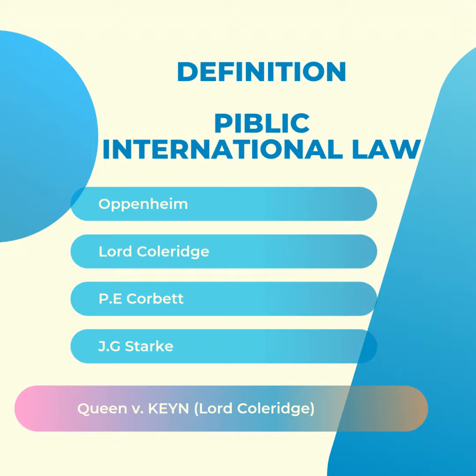Black's Law Dictionary defined law as that which is laid down, ordained, or established, and international law is that which regulates the intercourse of nations — the law of nations. As per Oppenheim, international law is the body of rules which are legally binding on states in their intercourse with each other.